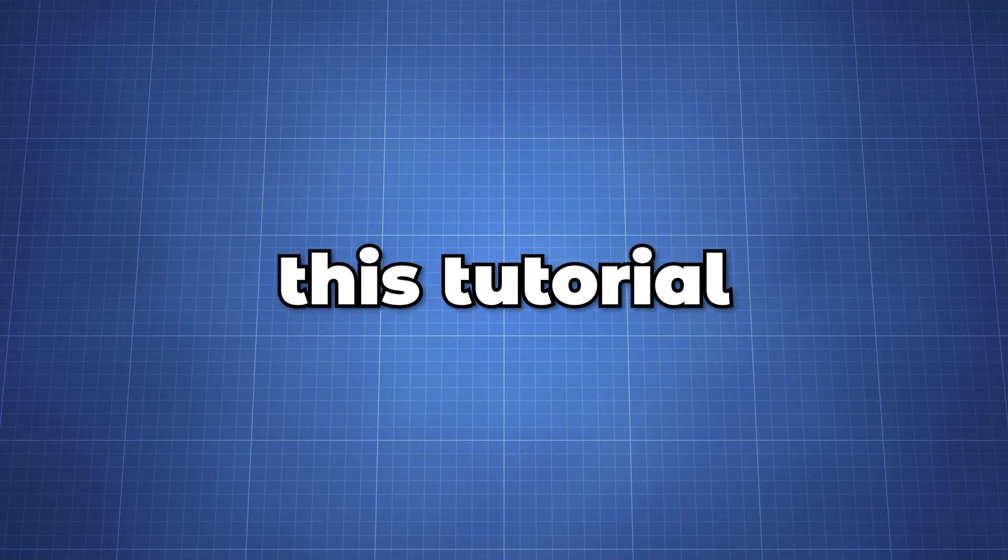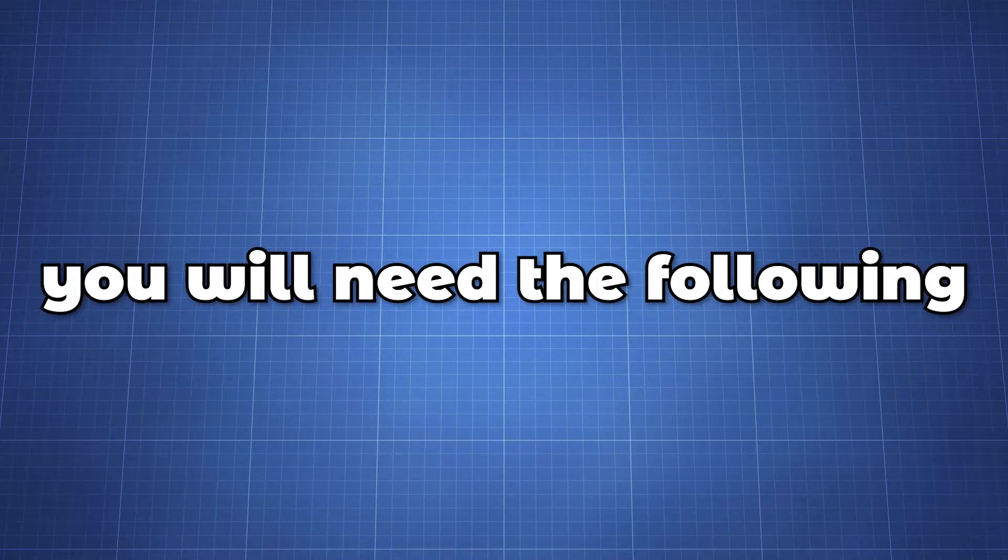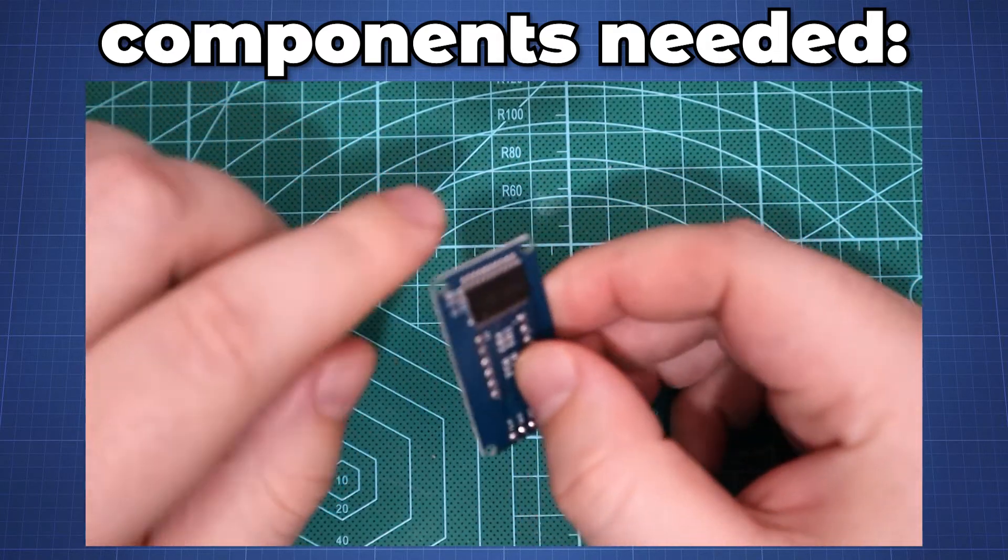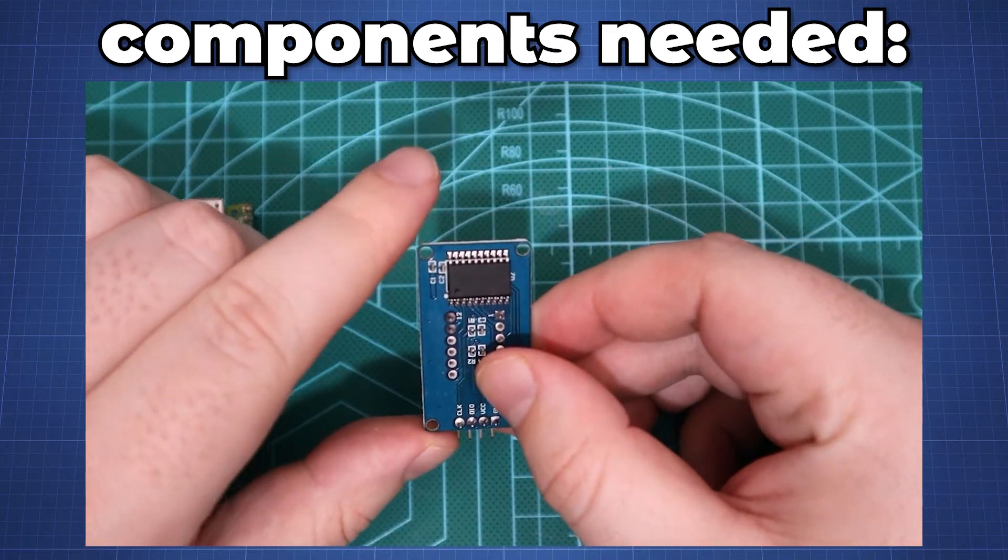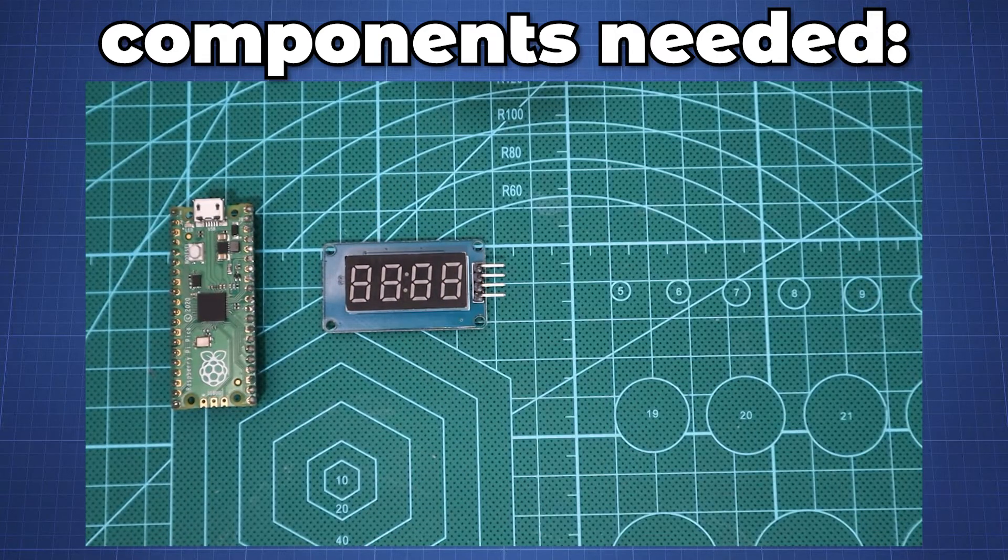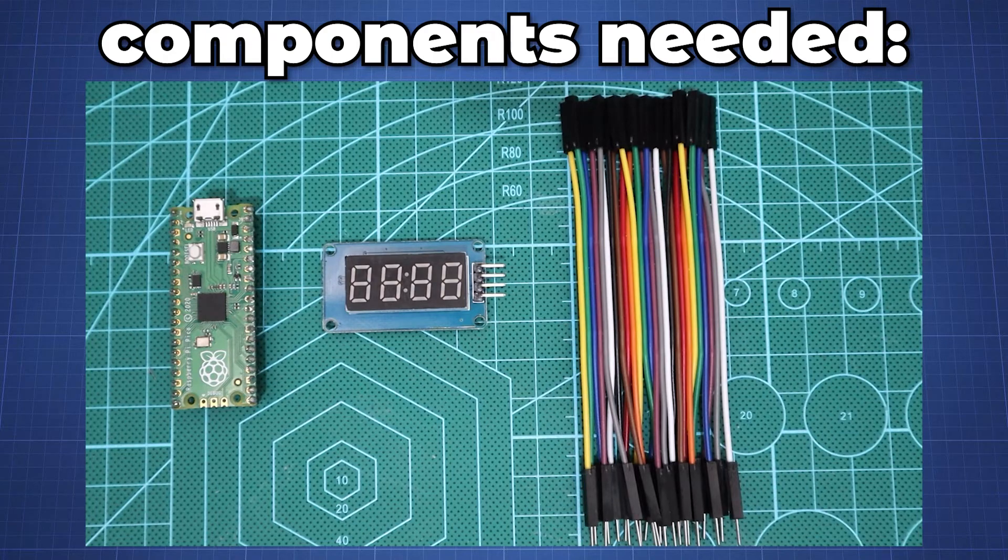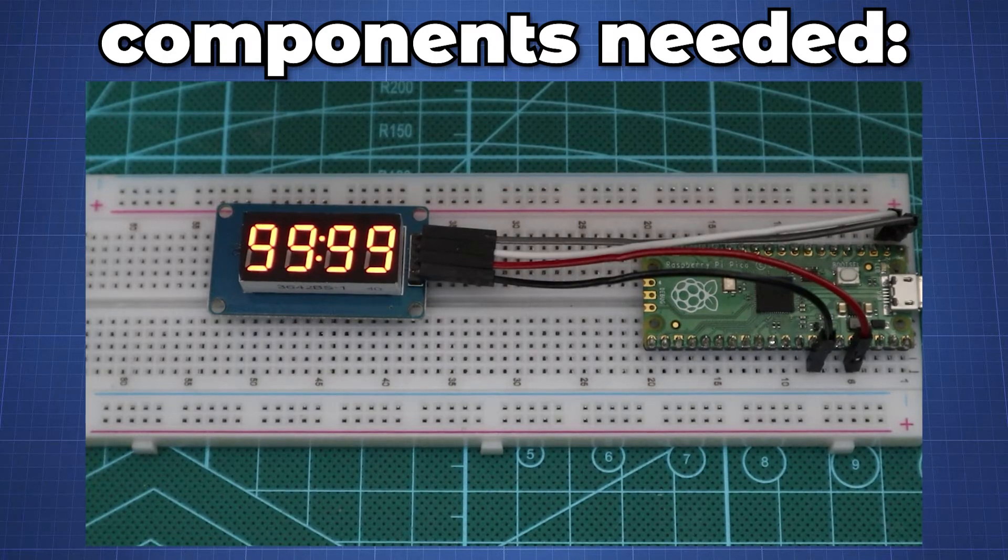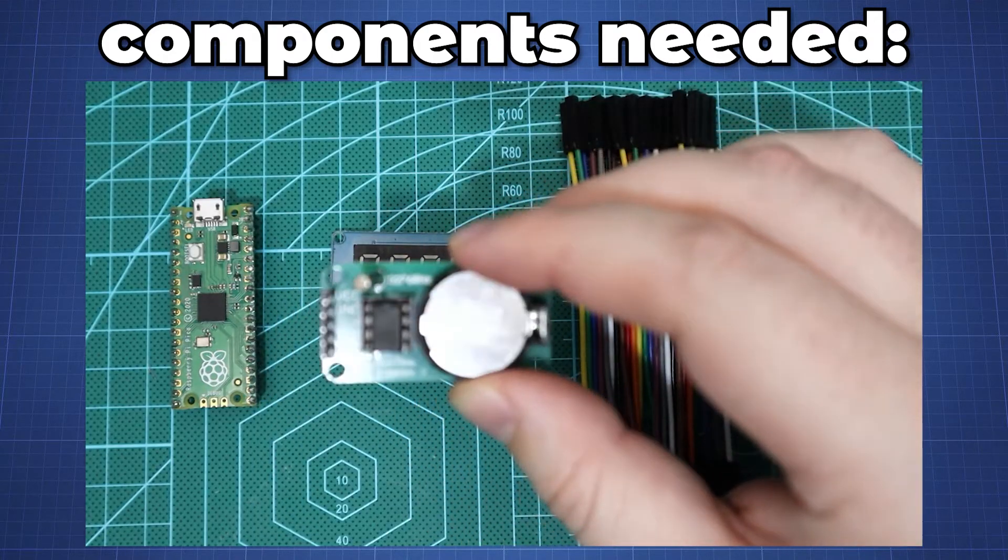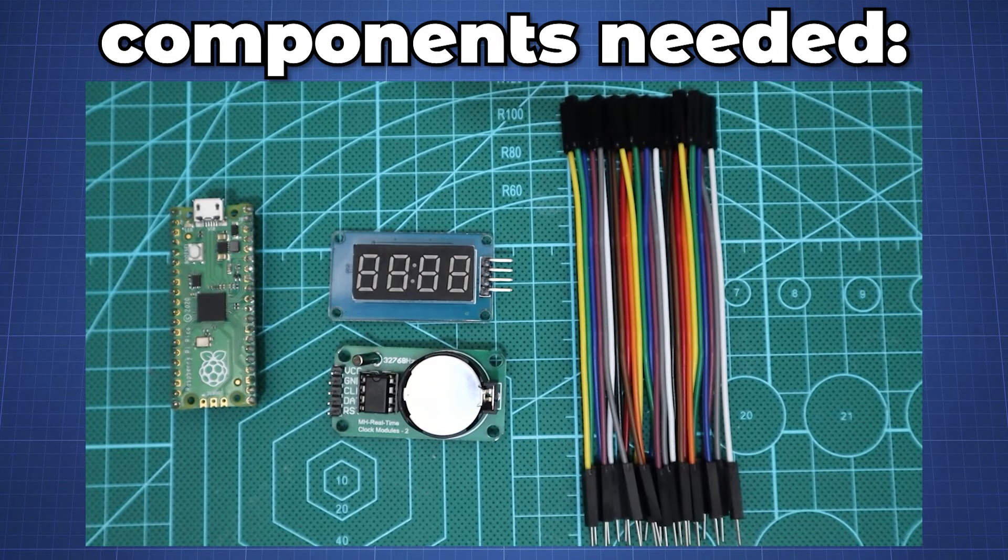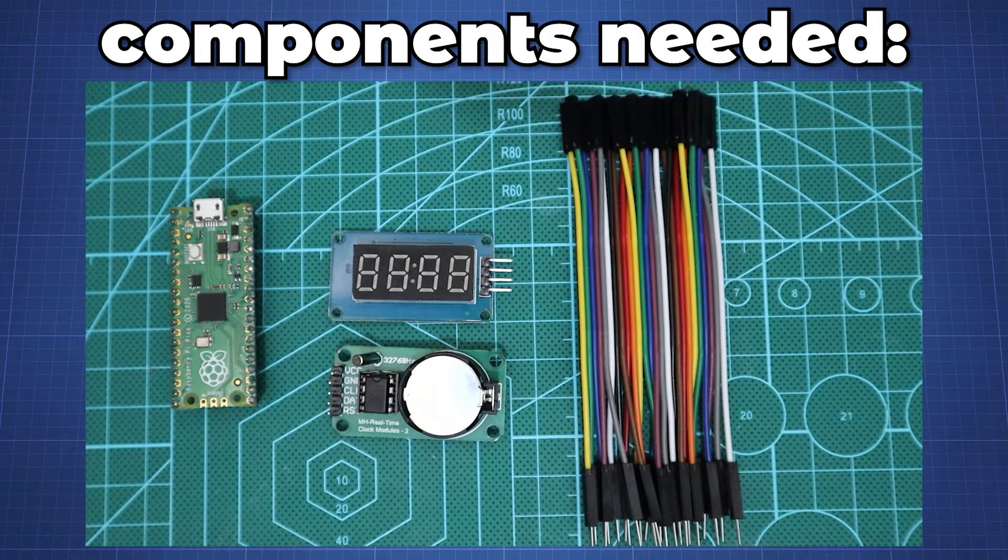To follow along with this tutorial you will need the following: A Pico and a seven segment display with the TM1637 driver IC and four female to female jumpers if you connect it directly to the Pico, or four male to female jumpers and a breadboard to connect it as I have done here. In example two we will add a DS1302 clock module which we will need four extra jumper wires depending on how you connect it to the Pico.